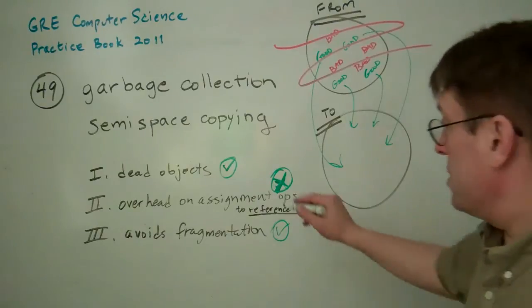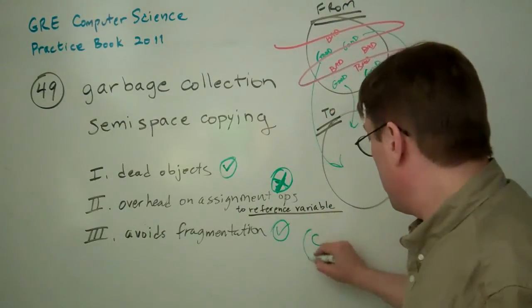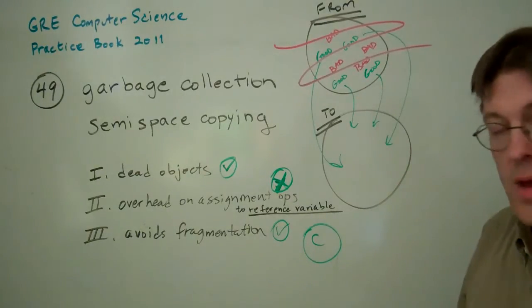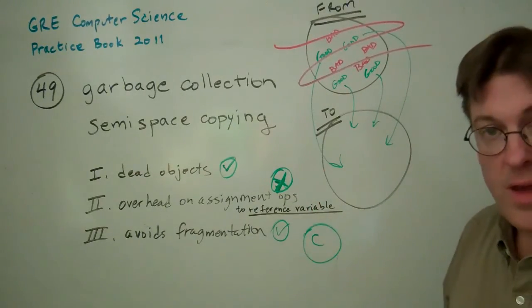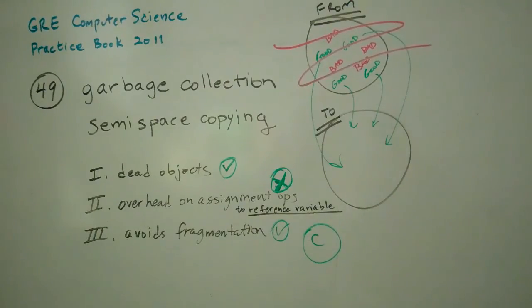So the answers are 1 and 3 and C. And on the test booklet, the answer to 49 is C, 1 and 3 only. So now we're going to get rid of all this, by the way. Let's go ahead and see three.